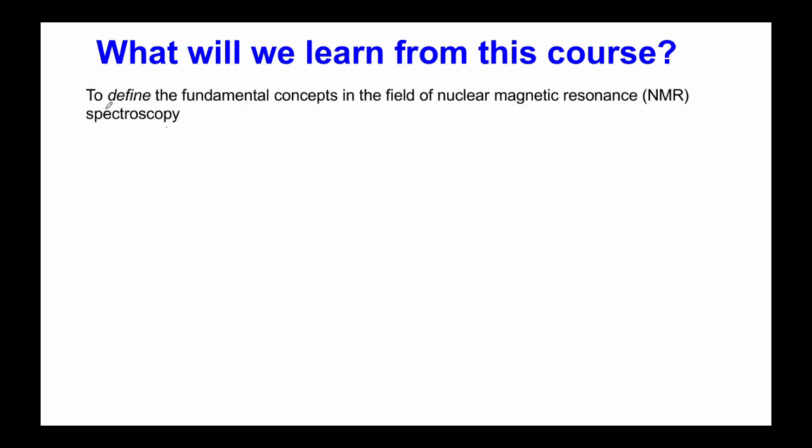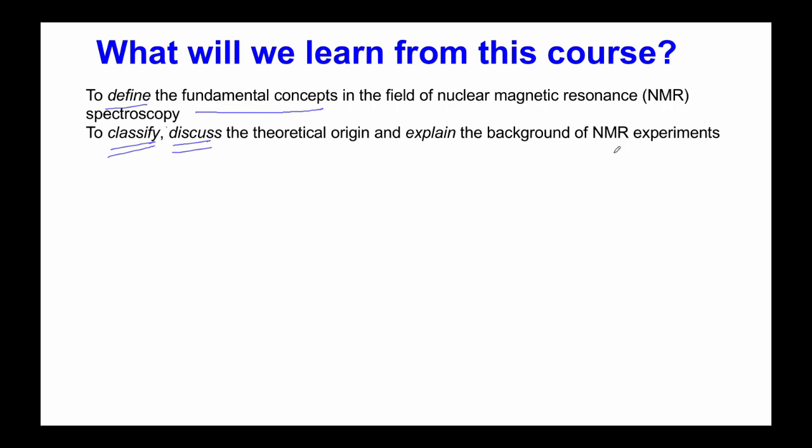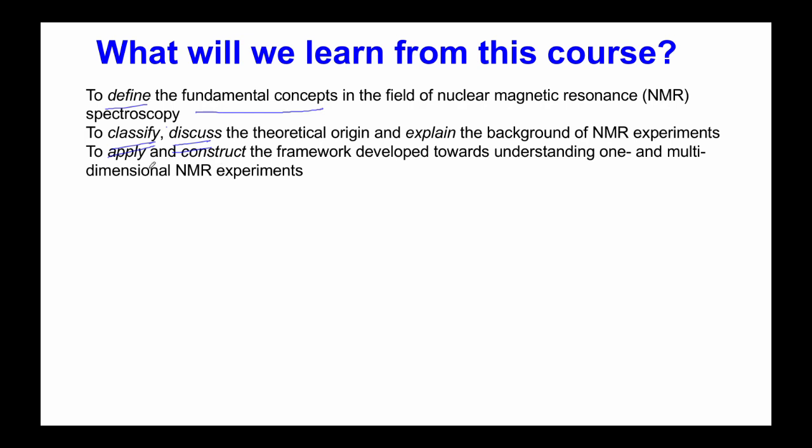We will first learn how to define and understand the various fundamental concepts involved in the field of nuclear magnetic resonance spectroscopy. Followed by this, we will classify and discuss the different theoretical origin and explain the background of NMR experiments. This is extremely crucial so that we understand why something happens and how to exploit it further to do things that are previously not feasible.